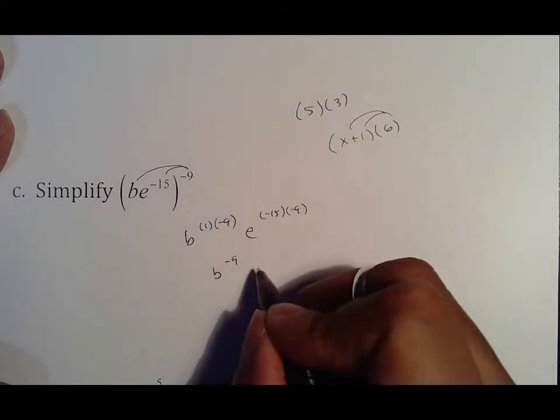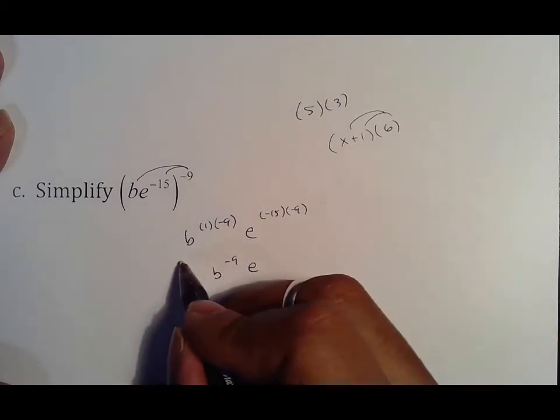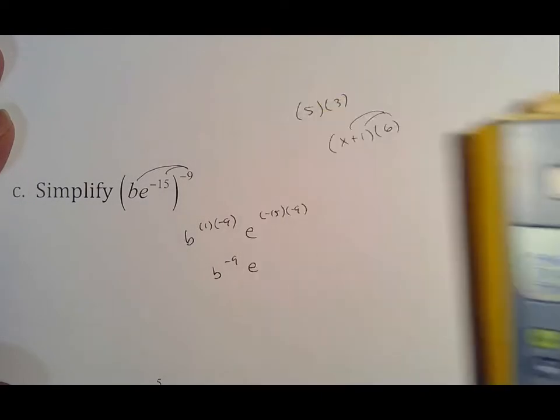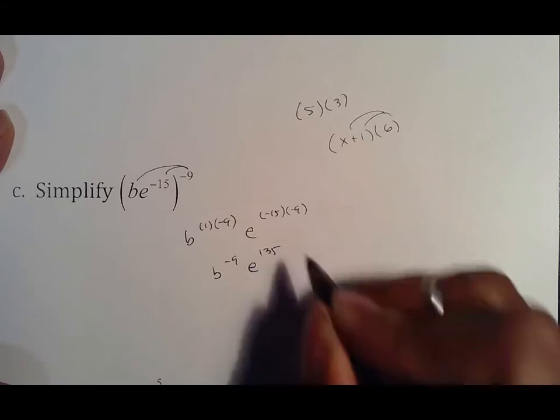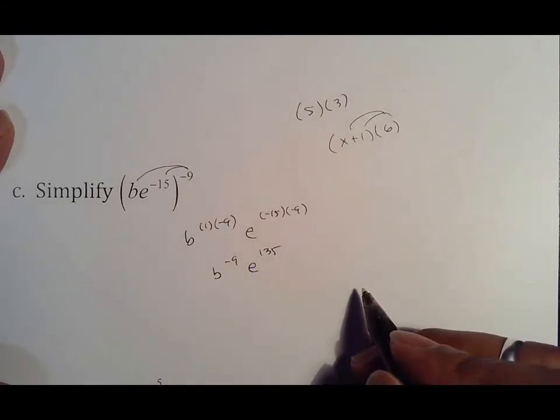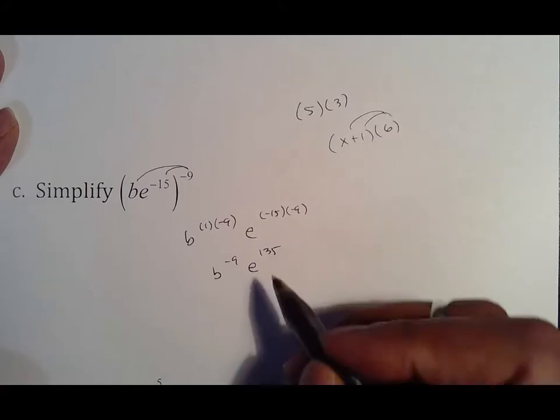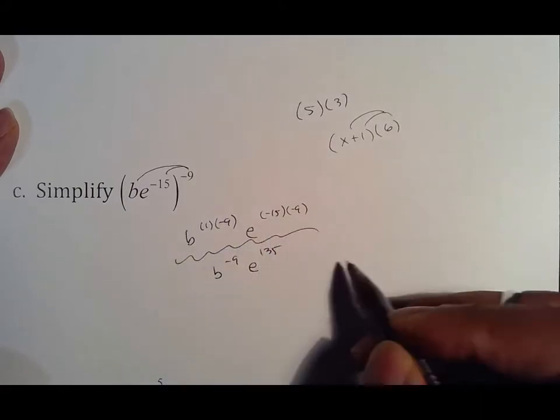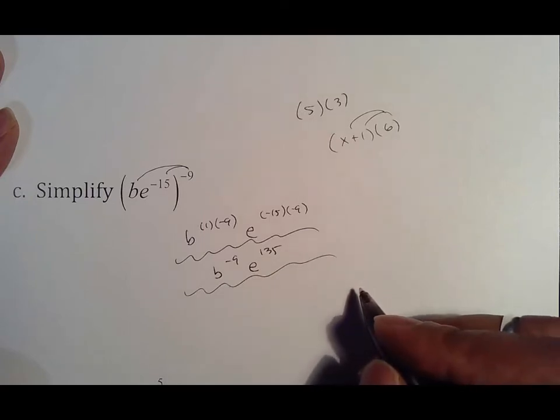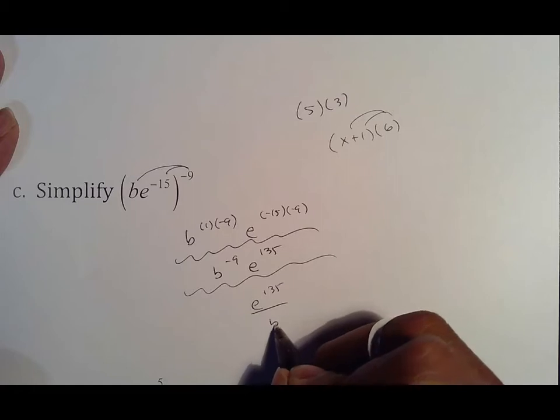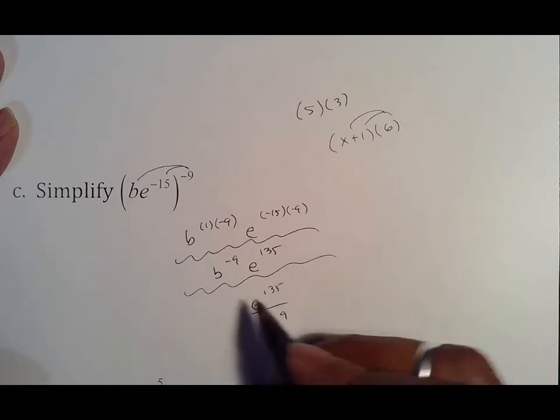So that's b to the negative ninth and e to the 135th. But everybody is not happy, so who moves? Would be your b. It's step one, step two, and then in the end you end up with e to the 135th over b to the ninth, because the b wanted to move down.